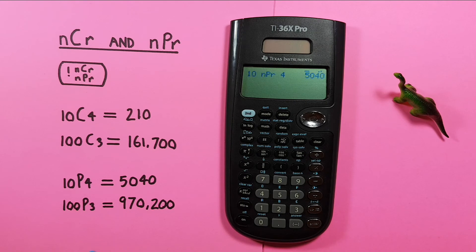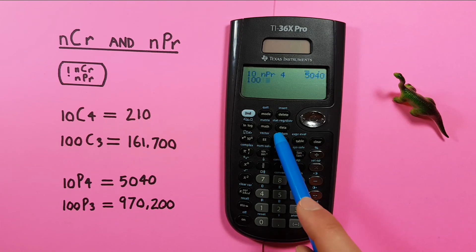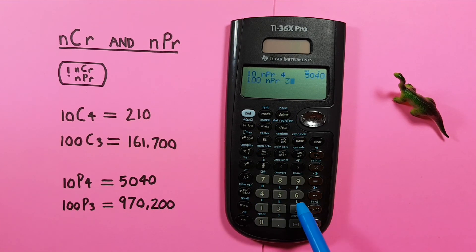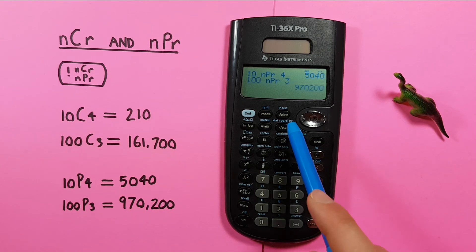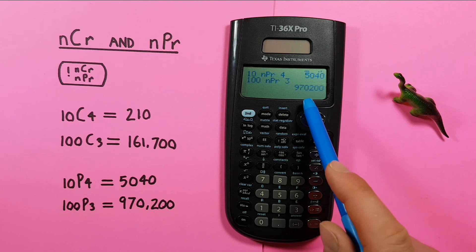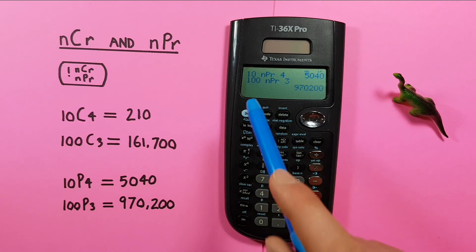And again, if we wanted to choose 3 from a set of 100, we start with the 100, cycle this through to the NPR, and then enter the 3 and enter. And we see there are 970,200 possible permutations when choosing 3 from a set of 100.